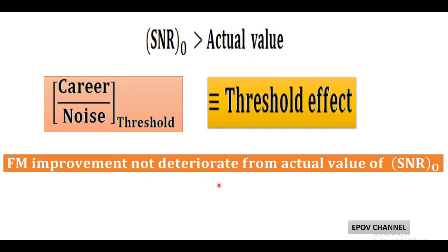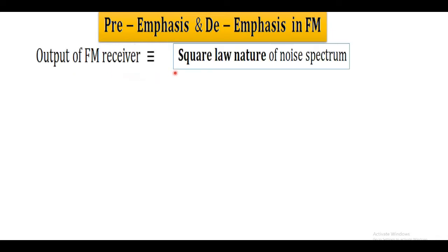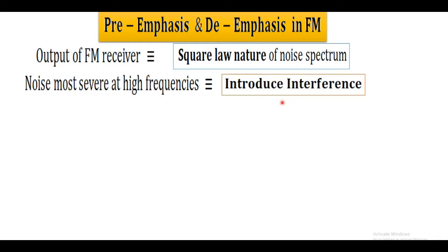Our main motive is to overcome these major problems at the FM receiver. For this, pre-emphasis is introduced at the FM transmitter and de-emphasis at FM receiver. As we know, in FM receiver, transmission bandwidth allows to improve noise performance, and according to figure of merit, noise spectrum is in accordance with the square law. While transmitting at very high frequency, the effect of noise is very severe, which introduces interference in FM wave.